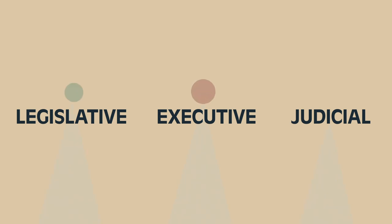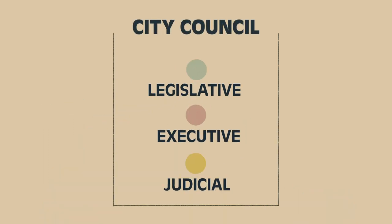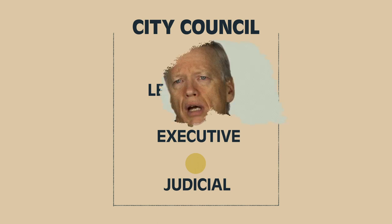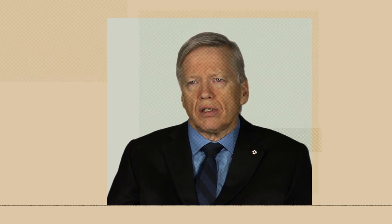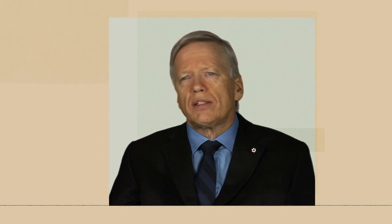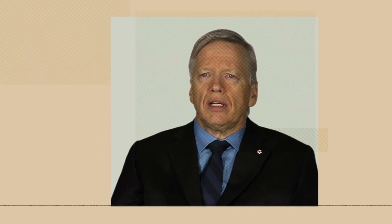Parliament has been designed to maintain a distribution of powers between the executive, legislative, and judicial. Despite the growth of municipal government, its design remains simple: a legislature, or city council, responsible for all three functions. Our government systems have developed over a thousand years; knowing this history can help us continue to evolve them.